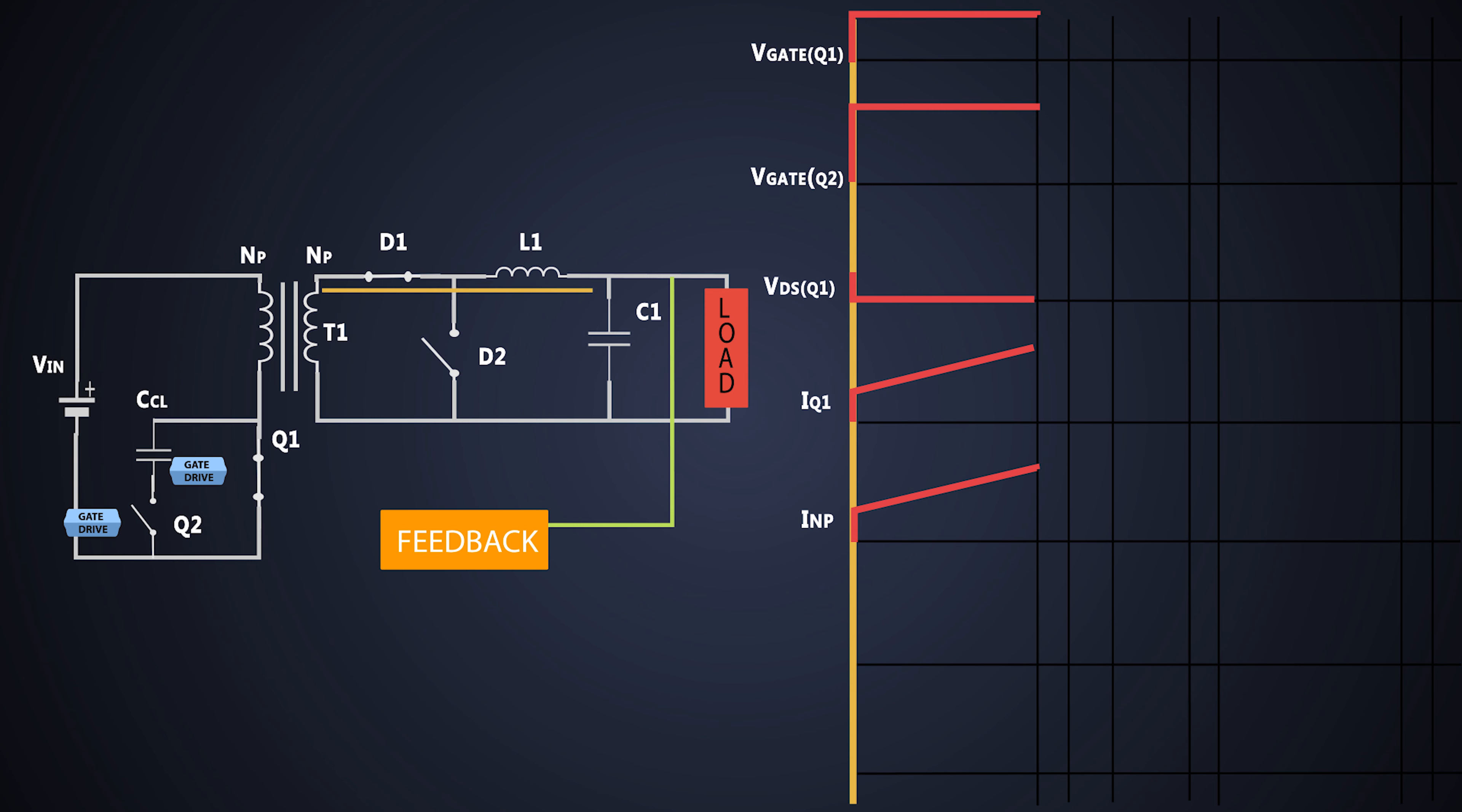The voltage across secondary winding starts rising up to input voltage times number of secondary turns upon number of primary turns. As the voltage across secondary turns increases, the current starts increasing through the inductor L1 up to load current. So the output voltage across the load is constant DC which is filtered by LC filter.